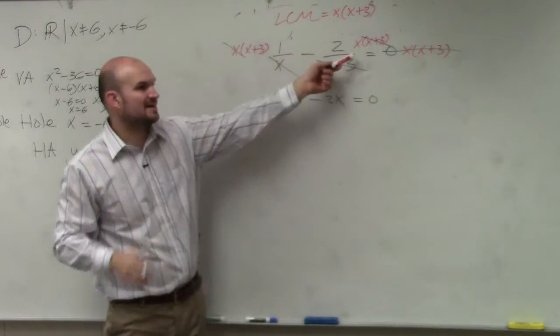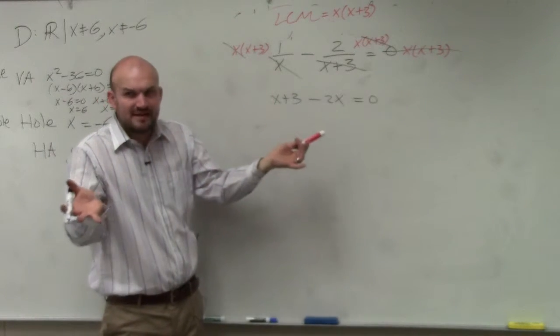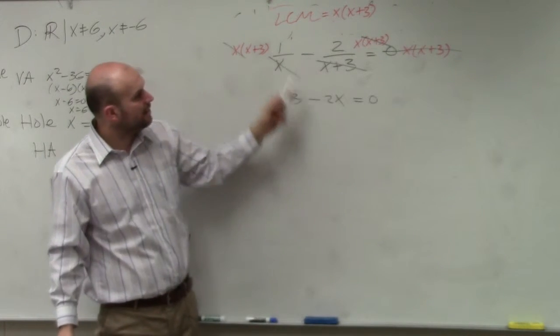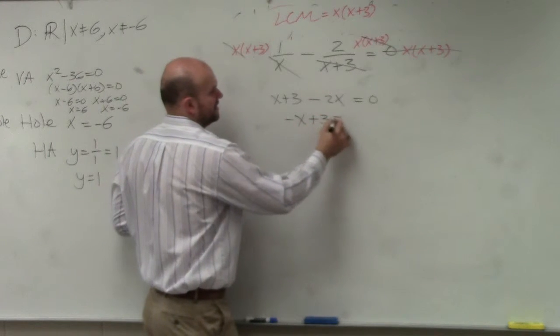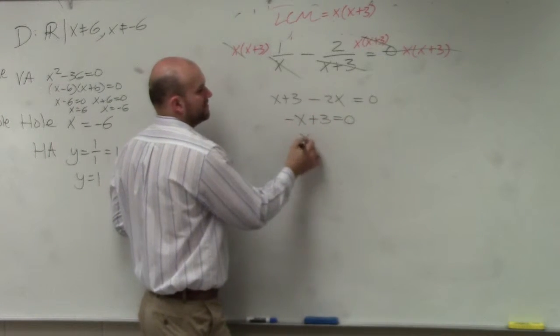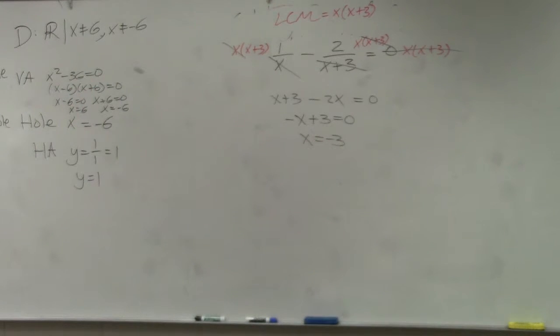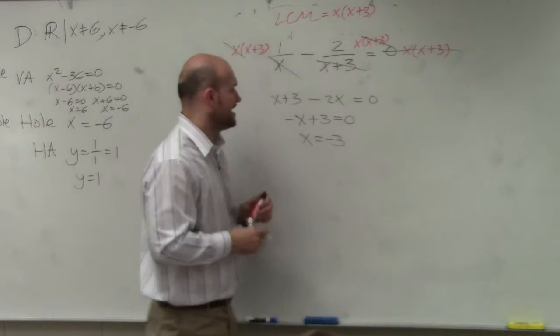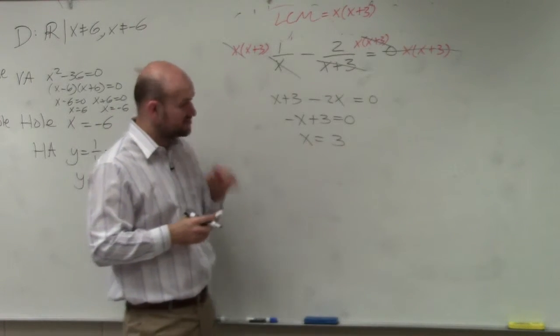So by multiplying by the common denominator, rather than trying to combine them, which is mathematically perfectly fine, however, by doing this, I can now combine. So that's negative x plus 3 equals 0. And therefore, you could say x equals negative 3. Oops. No. X equals positive 3, right? X equals positive 3.